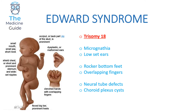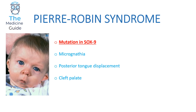This is an example of Pierre Robin syndrome, which is due to a mutation in SOX9. Children will have micrognathia, posterior displacement of the tongue, and a cleft palate. The key aspects to differentiate Pierre Robin from Patau syndrome are the posterior tongue displacement and micrognathia. Also, if you're given information about a SOX9 mutation, that should immediately make you think Pierre Robin syndrome.